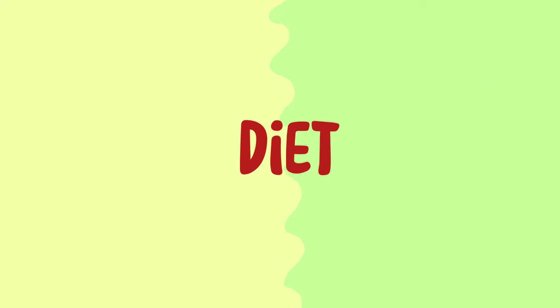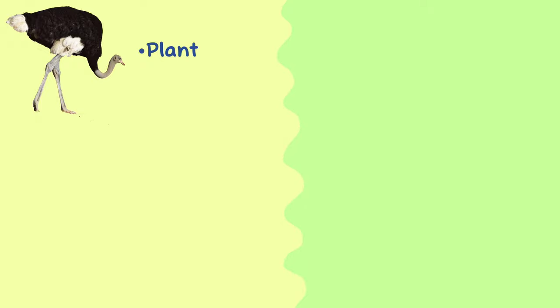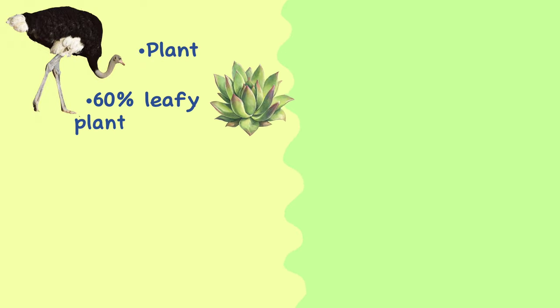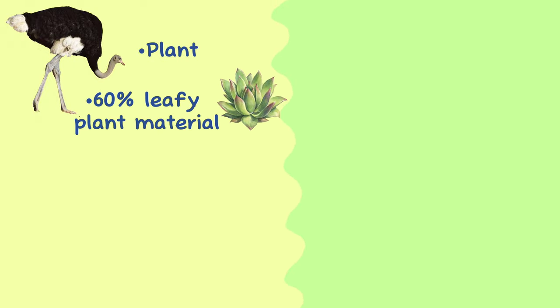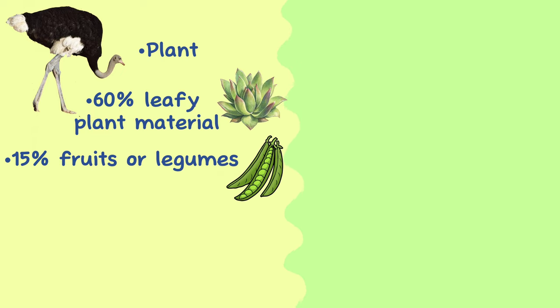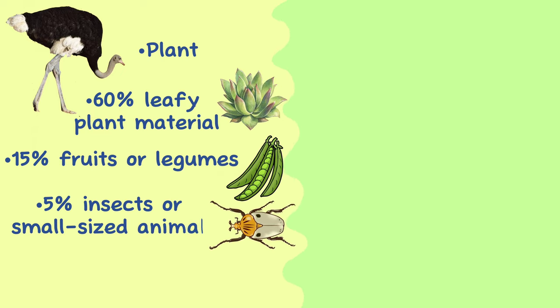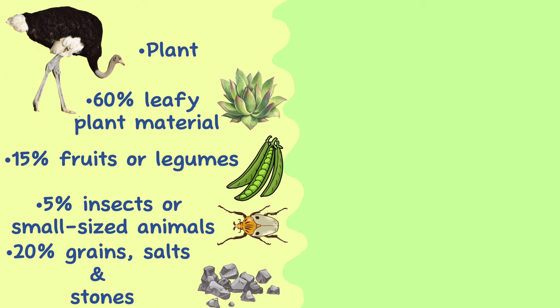Diet. In the wild, ostriches have a diet made up primarily of plant matter. Ostrich diets consist of roughly 60% leafy plant material, 15% fruits or legumes, 5% insects or small-sized animals, 20% grains, salts, and stones.